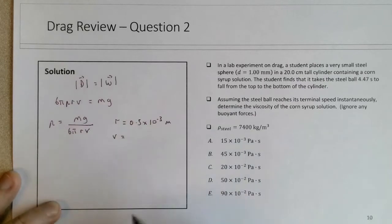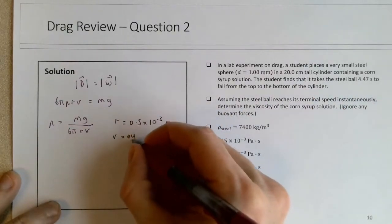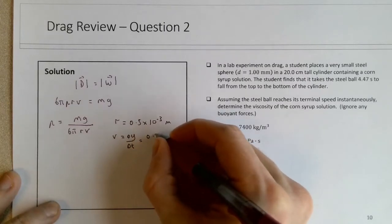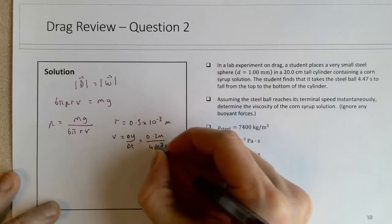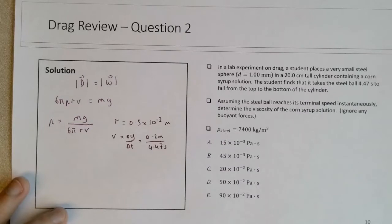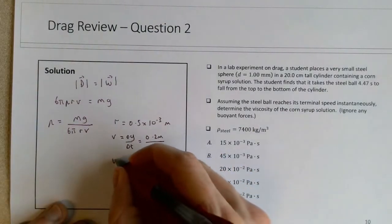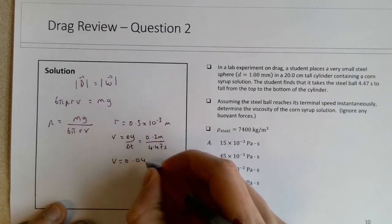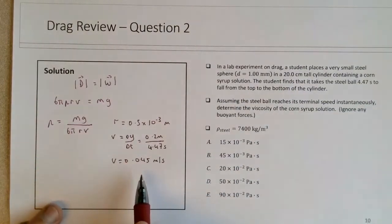The velocity, again, has to be in the correct unit, so it's going to be equal to Δy over Δt, so that's 0.2 meters over 4.47 seconds. So I haven't calculated that previously, and it's quite small, 0.045 meters per second.